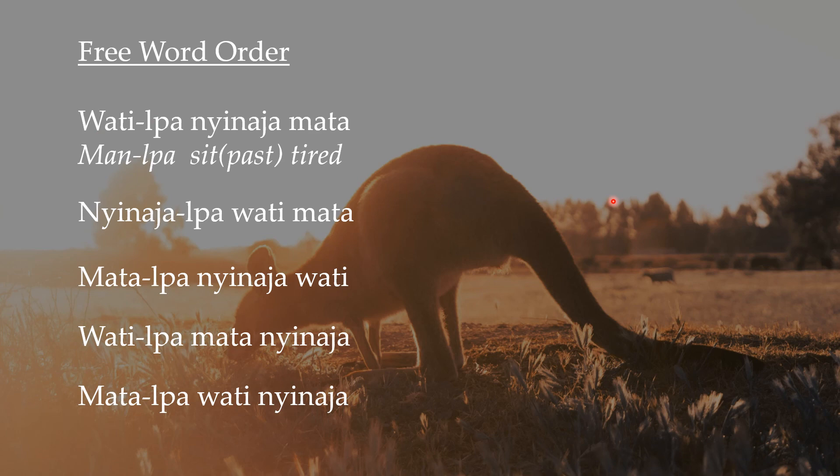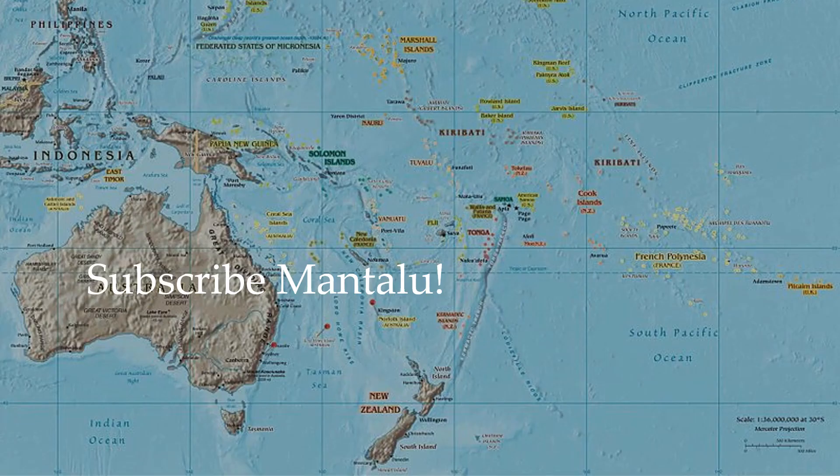We'll look at more examples as we go along — it gets a bit complicated, I know. Generally, if you know Latin, Greek, Russian, or Hungarian, you'll understand that the most important or focused word tends to come first. I'm probably going to stop now because my batteries are dying, but we'll get to more examples in later videos. Thank you very much — if you're interested, please subscribe to the channel for more information about Aboriginal languages.